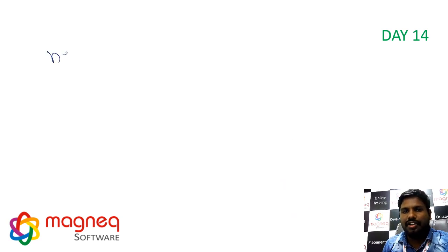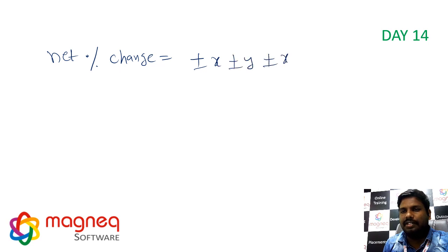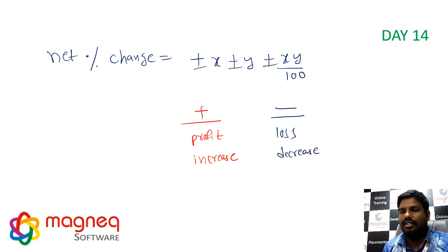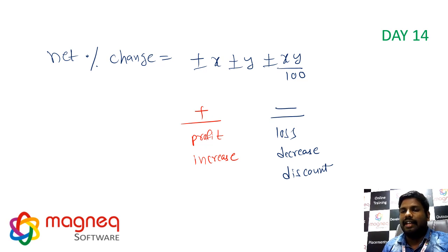Net percentage change formula: plus or minus X, plus or minus Y, plus or minus XY by 100. Use plus sign for profit or increase, and minus sign for loss, decrease, or discount.